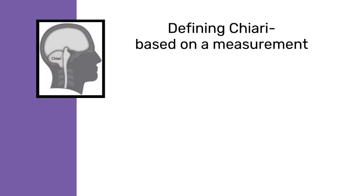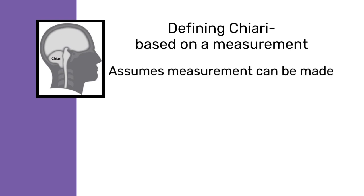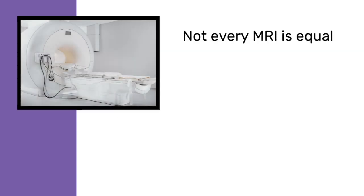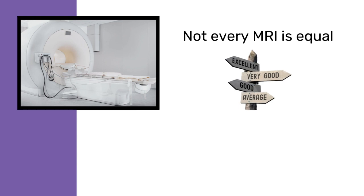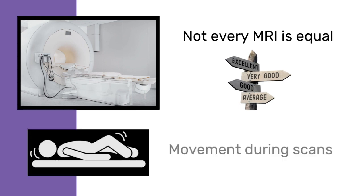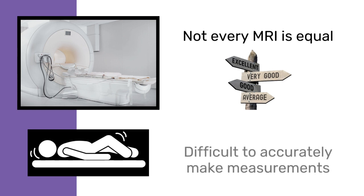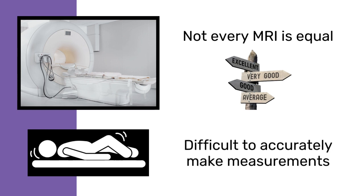A second problem with defining Chiari based on a measurement is that it assumes that measurement can be made with a certain level of accuracy and precision. While MRIs are amazing machines, not every MRI is equal in terms of the quality of images it can produce. This, combined with issues of patients moving during scans, can make it difficult to accurately make measurements at the millimeter level.